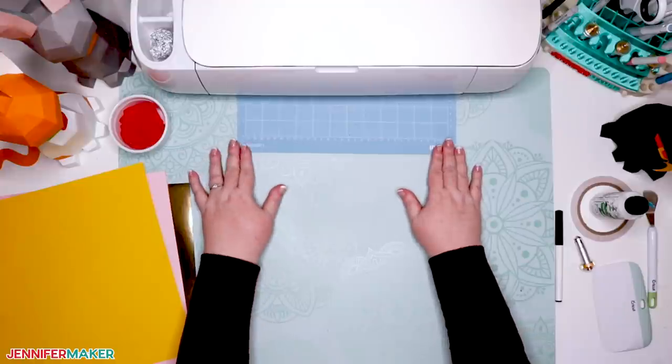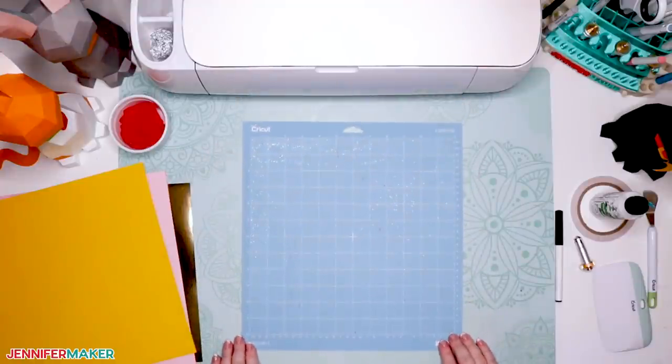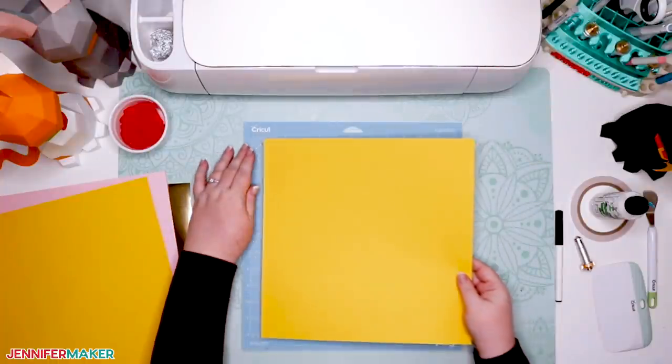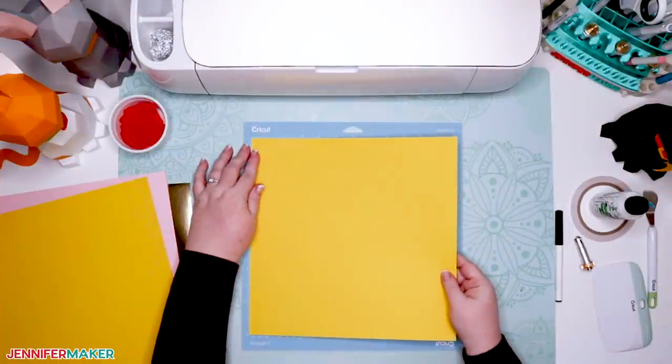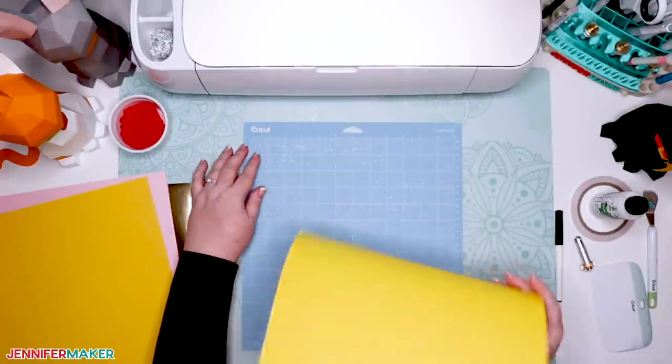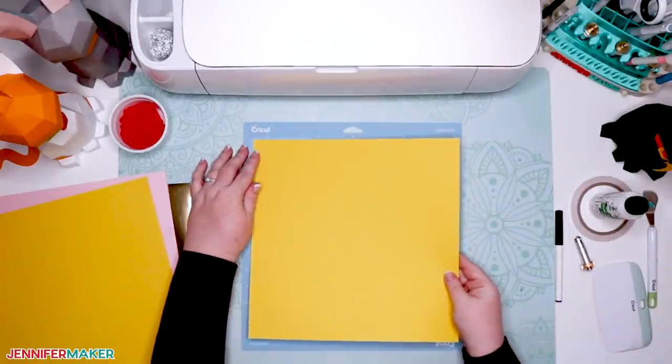All right, so it's time to cut your kitty pieces. Place your cardstock on your machine mat in the upper left corner. If you're using a patterned or single sided cardstock, put the side that you want to be seen on the outside of your cat face down on your machine mat.